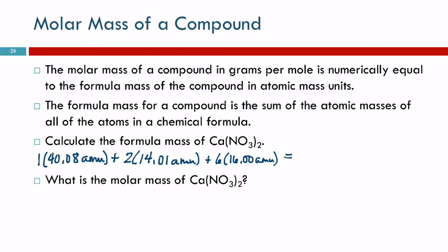So then we take our calculator. We've got one times 40.08 plus two times 14.01 plus six times 16 equals 164.1 atomic mass units. So we learned to do that in section 5.11. You take the mass of each of the pieces, and you add them up together.